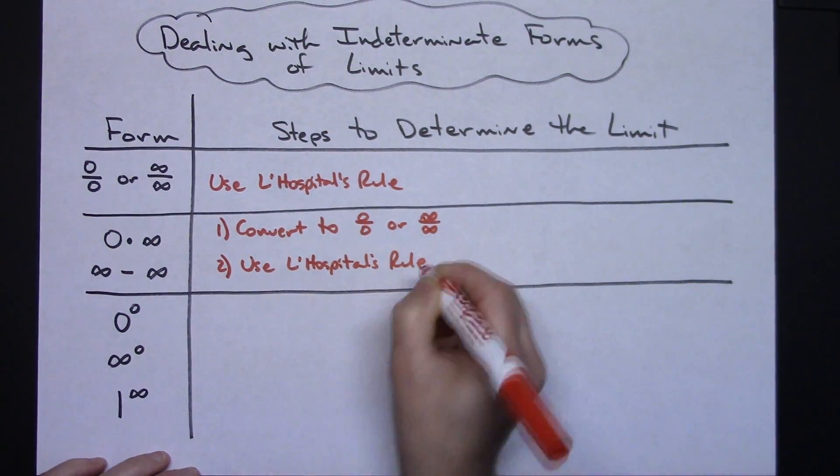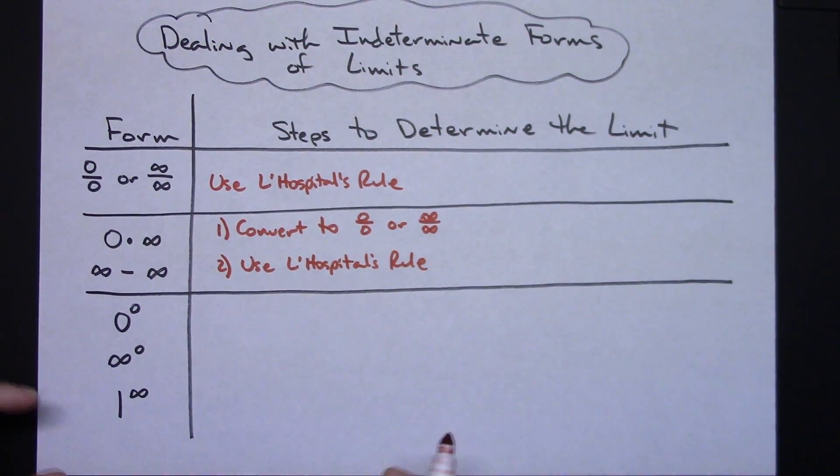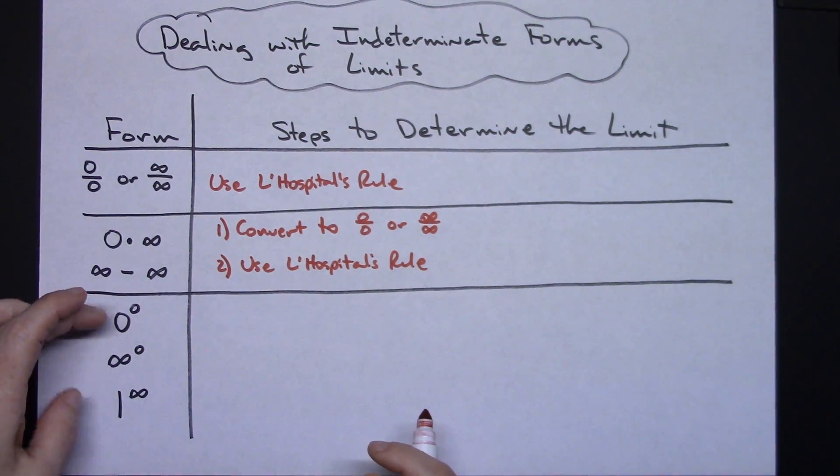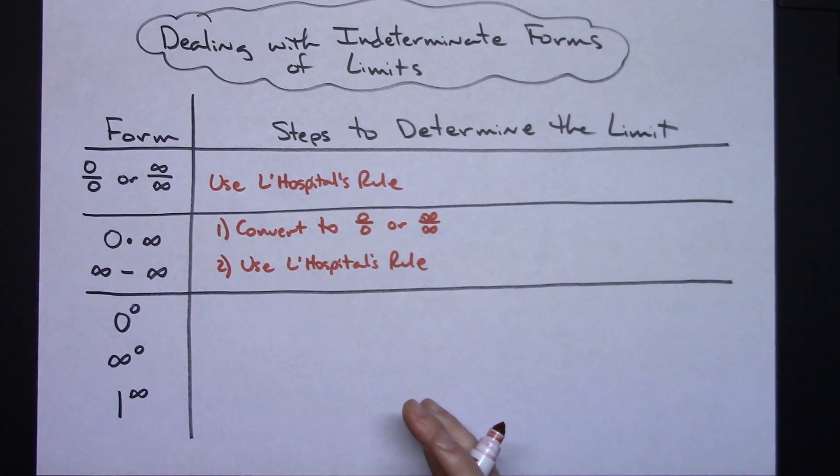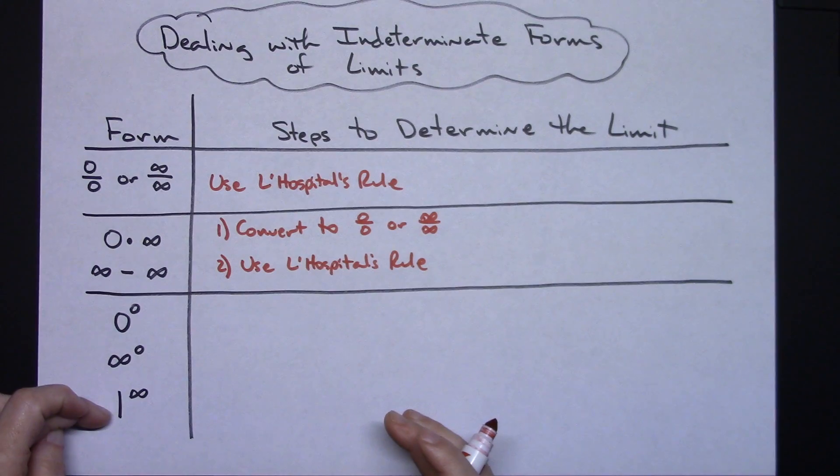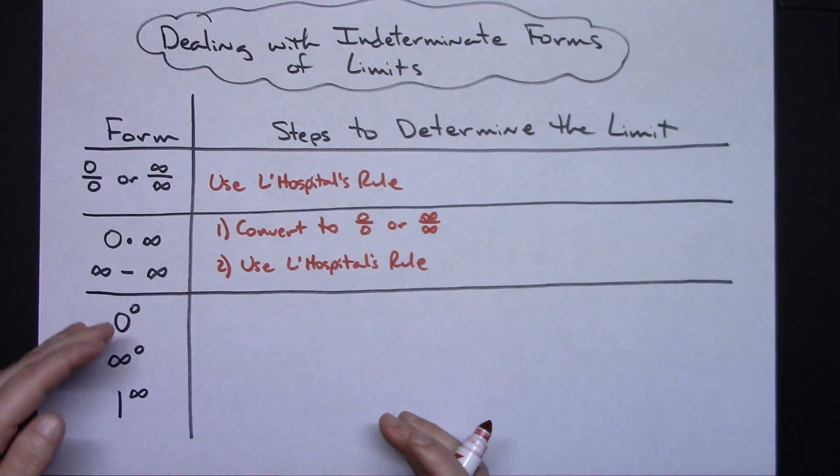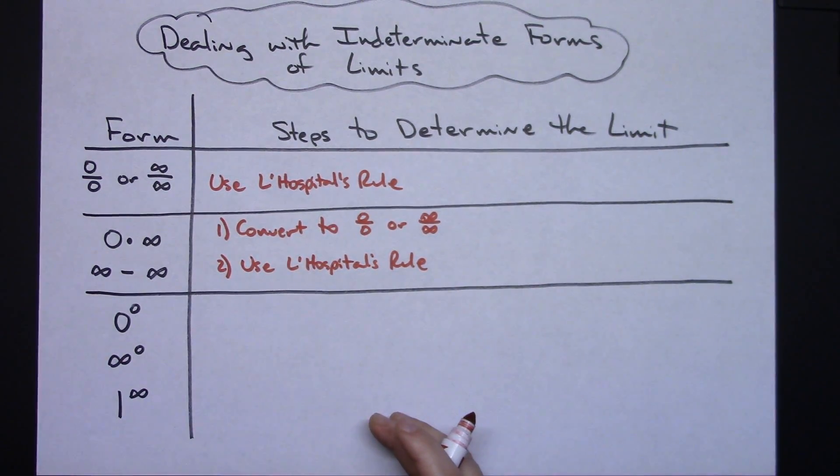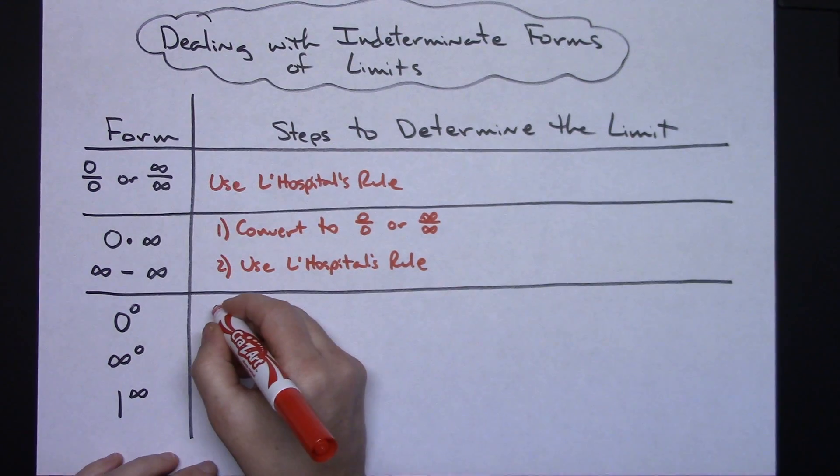That takes care of those scenarios. Now on these last three categories we've got zero raised to zero as an indeterminate form, or infinity raised to zero, or one raised to infinity. With any of these forms, the best known way is to do three steps.